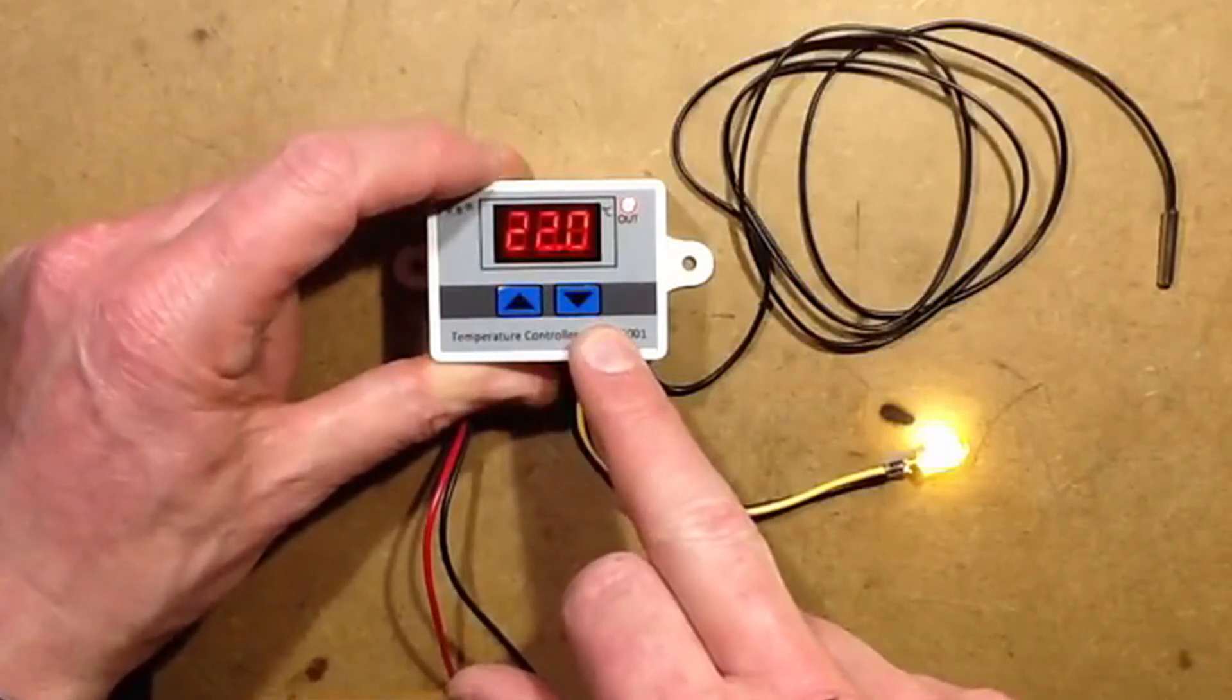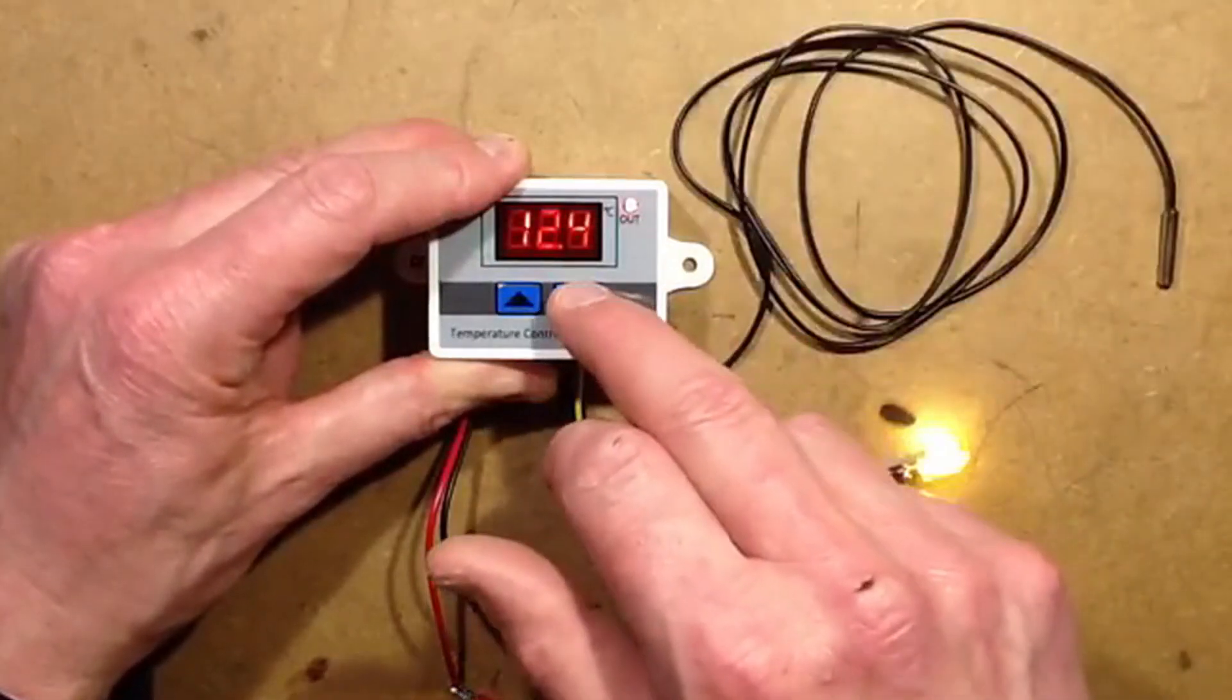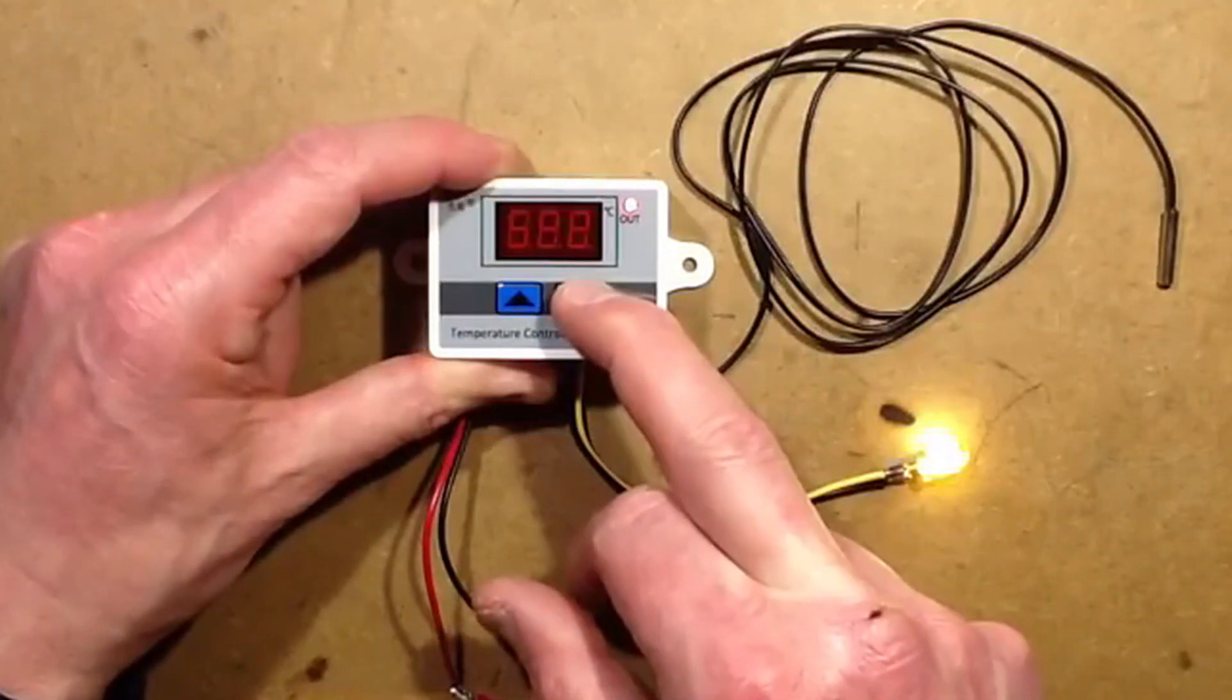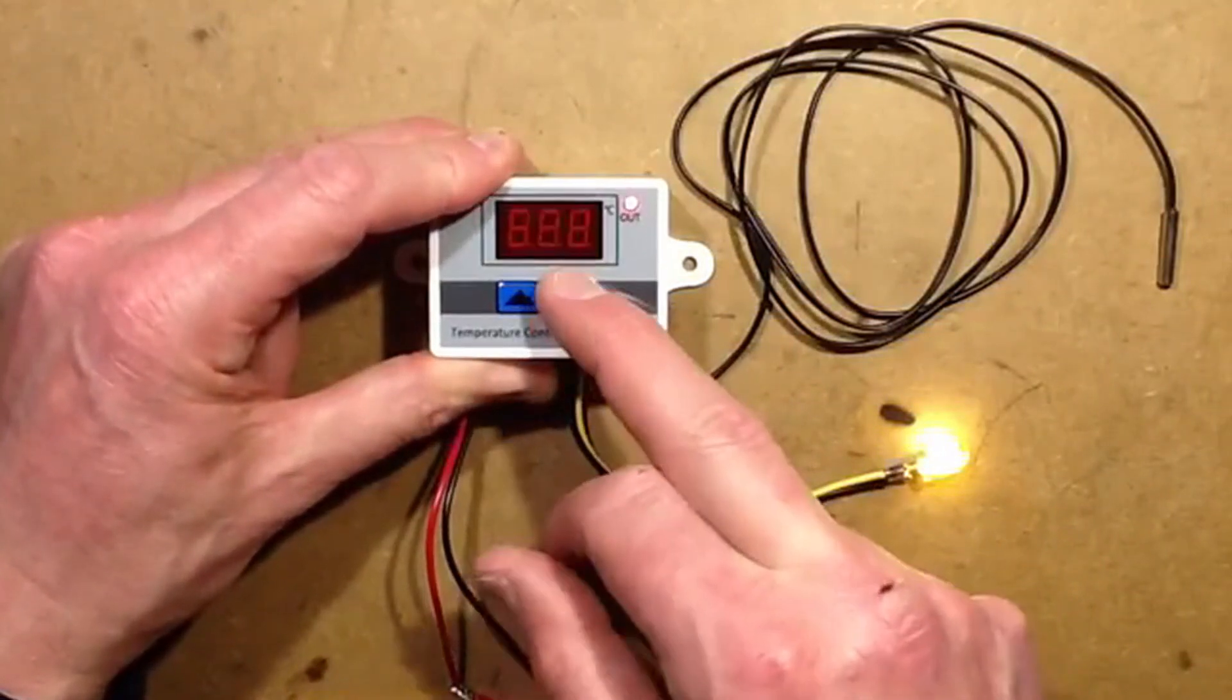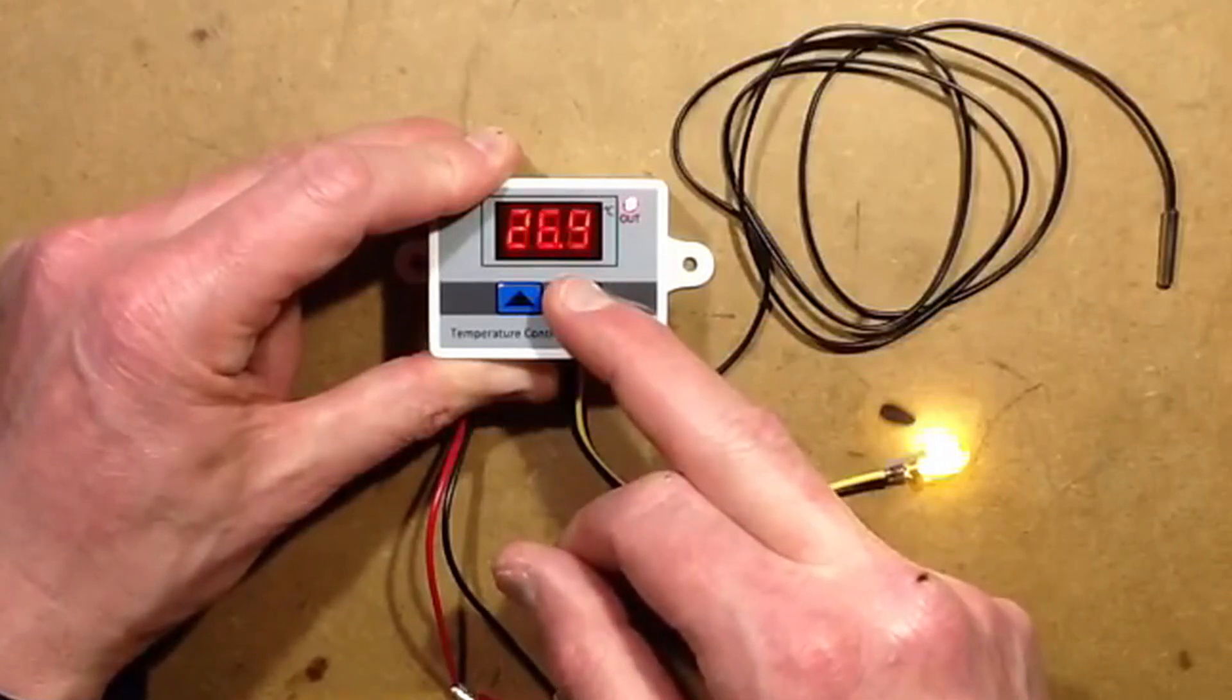That's the start temperature, 22. And I wanted to go off if it's cooling at about 20. So I press the right hand button, the off button, until it starts flashing, and then I can use the down button to take it right down to about 20.